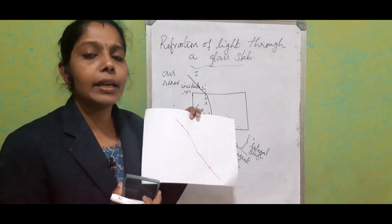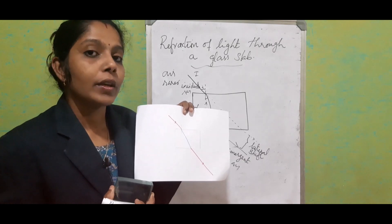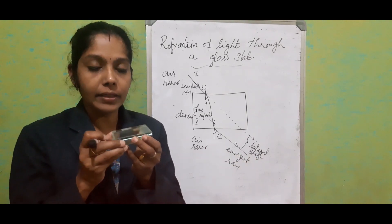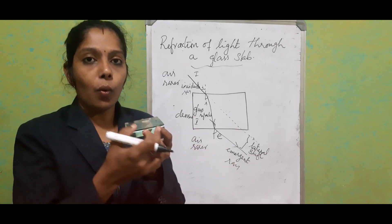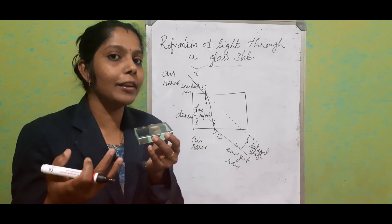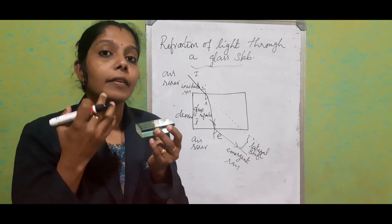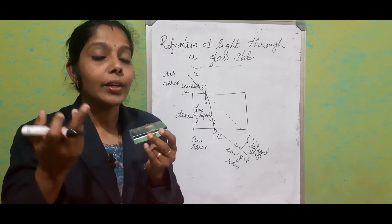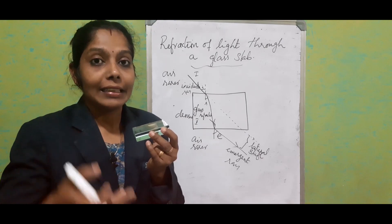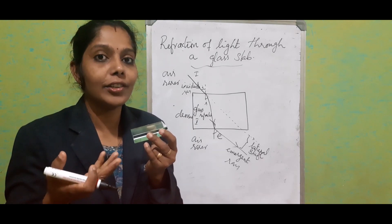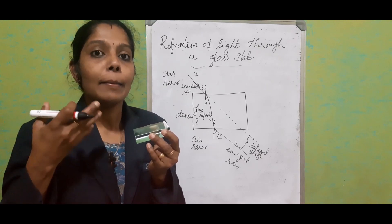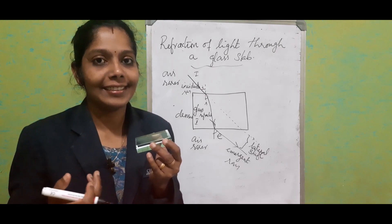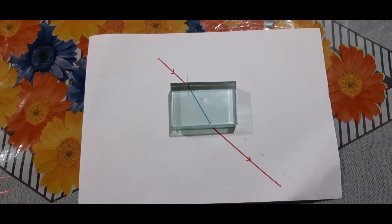For this particular glass slab, I have drawn the path of the light ray on paper. The red color marking is for the incident ray and the emergent ray, and the blue color shows the path of light inside the glass slab. We know that light ray always travels in a straight line. When the light enters from one side and bending happens and it comes out, when you watch from one side you never feel the bending of light.